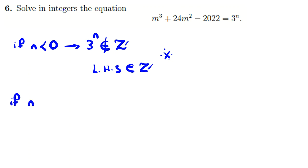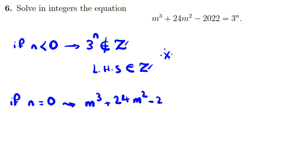Since the problem didn't say positive integer, we should check n=0 and positive numbers. If n=0, then m³ + 24m² − 2022 = 1, which simplifies to m³ + 24m² = 2023.